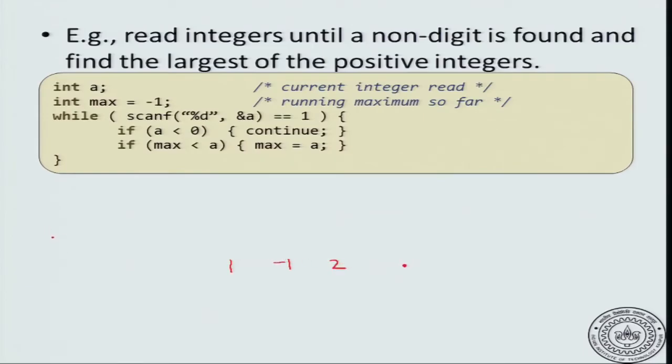Let us say that I initialize the maximum to some reasonable value. Since we are looking at the largest of the positive integers, I can initialize maximum to 0. Then, I look at the first one, the maximum read so far. It is a positive entry. So I will update max equal to 1.